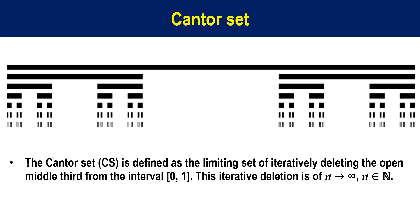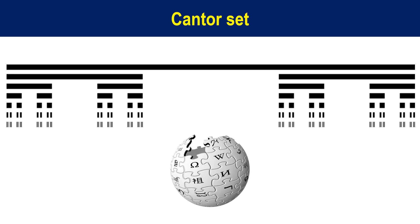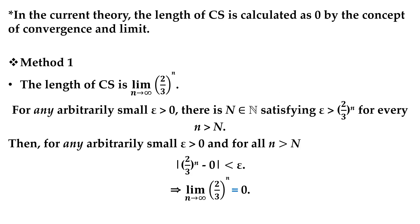This iterative deletion is of n approaching infinity when n is a natural number. Wikipedia is a good reading material with many good references. In the current theory, the length of the Cantor set is calculated as 0 by the concept of convergence and limit.